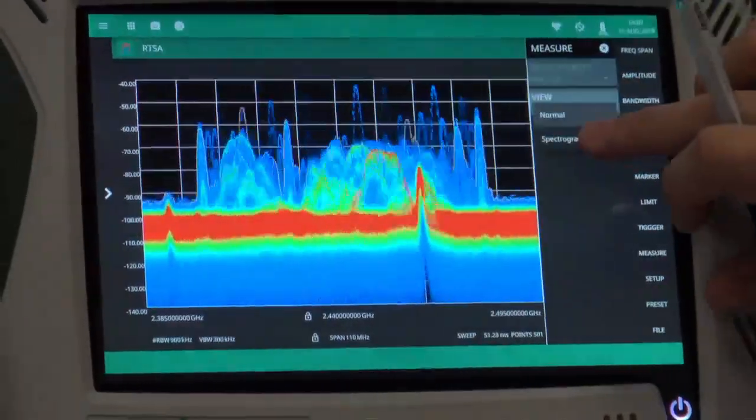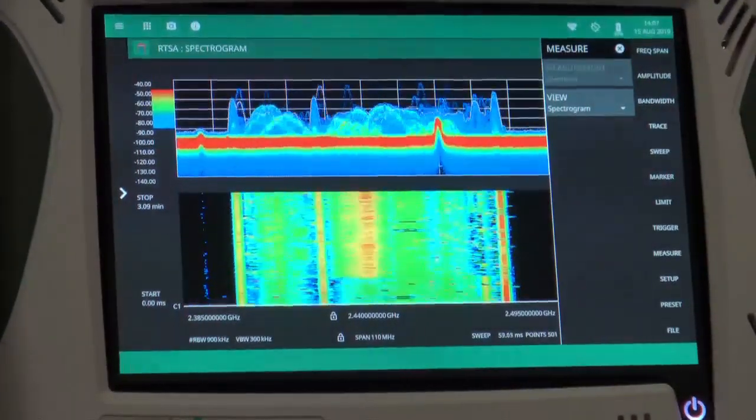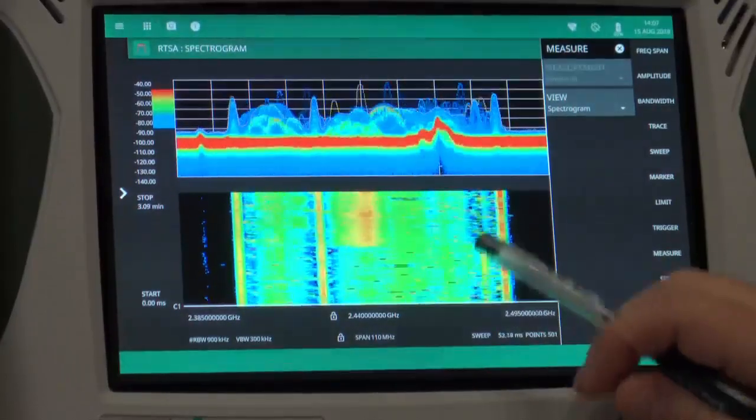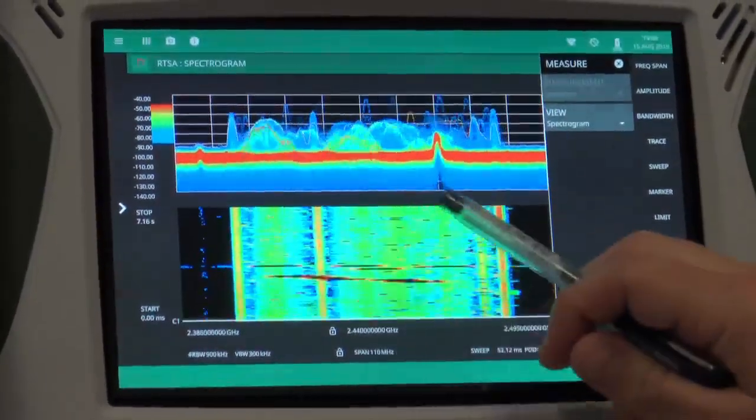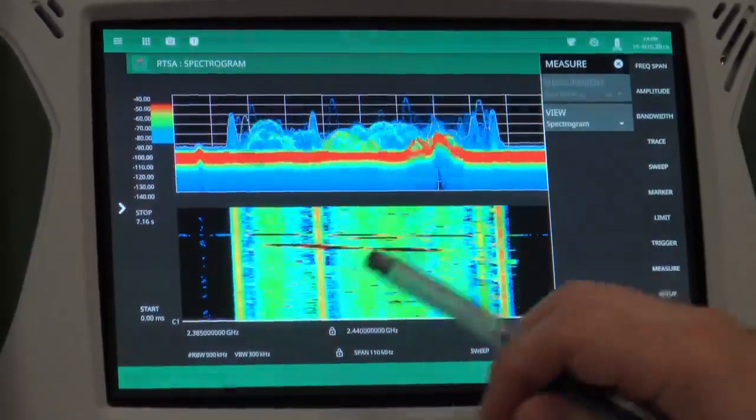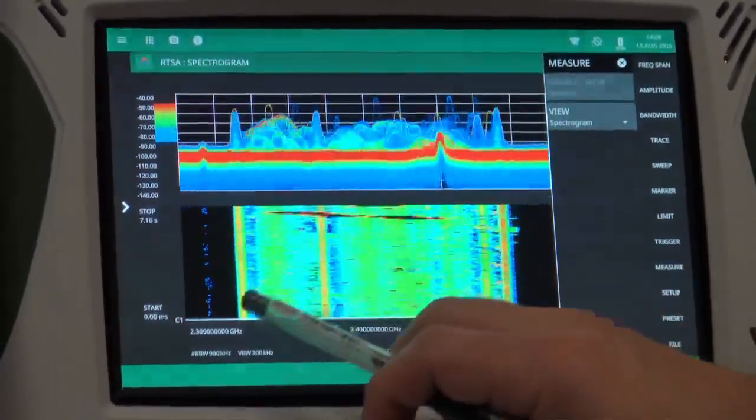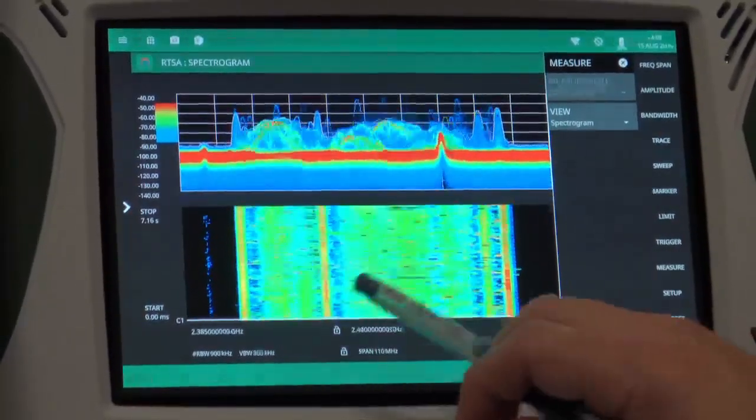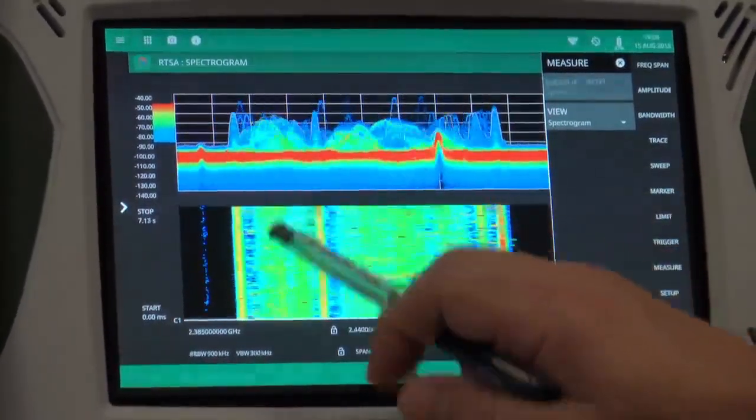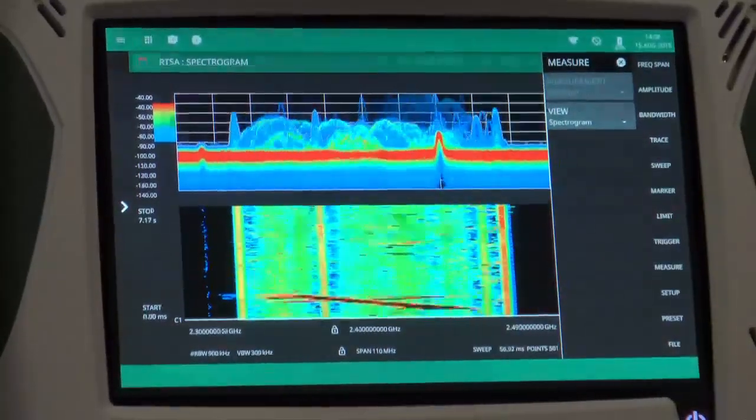and if I switch to a spectrogram view, I can see even more of the information, where each of the different Bluetooth carriers, as they move through the channels, are shown clearly here bouncing in their 2 MHz channels, as well as the advertising channels, as they cycle through their process, and then the fixed Wi-Fi channels and the variable Wi-Fi channels, as well.